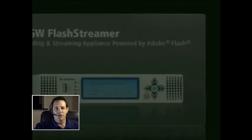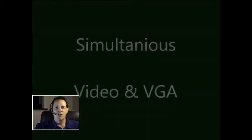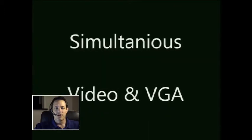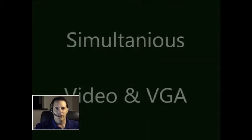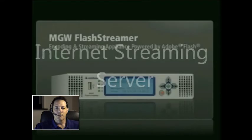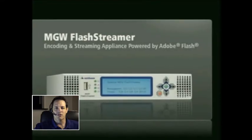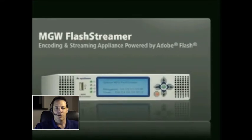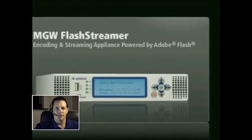The MGW FlashStreamer is a live Adobe encoder that supports video and VGA graphics simultaneously, as I'm using in this overview. It's also a Flash server, eliminating the requirement for an Internet service provider to host the content.